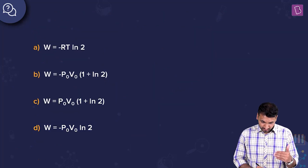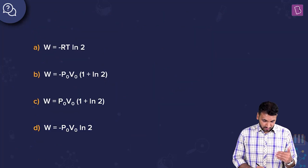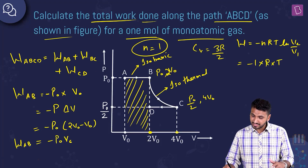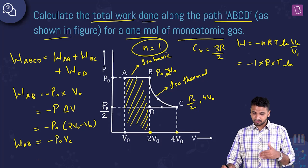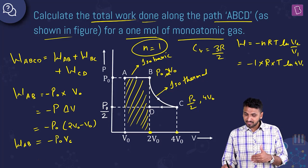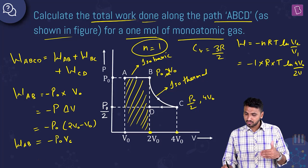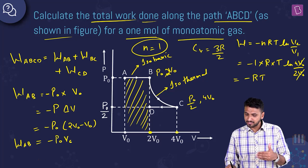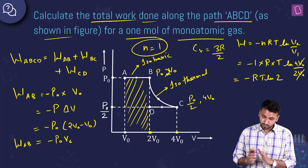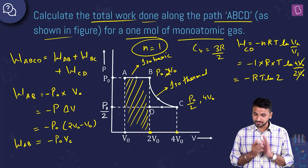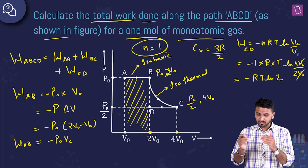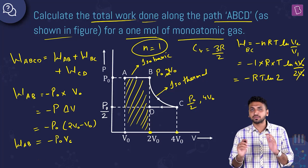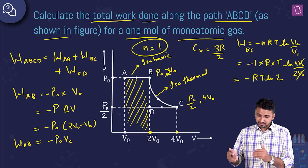For the isothermal process BC, n = 1, so W_BC = −RT ln(V₂/V₁). V₂ is 4V₀ and V₁ is 2V₀, so 4V₀/2V₀ = 2. Therefore W_BC = −RT ln 2. Now we are left with process CD.